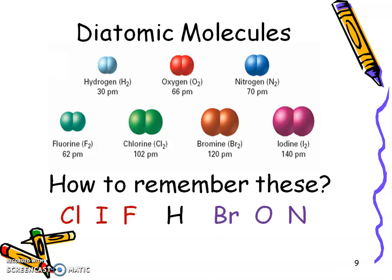That two tells us that it's a diatomic molecule. So there are seven of these and I like to remember them two ways. One is this name Cliff H Brom. So Cl for chlorine, I for iodine, F for fluorine, H for hydrogen, Br for bromine, O for oxygen, and N for nitrogen.